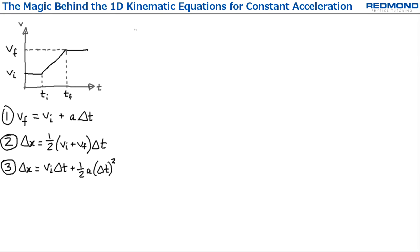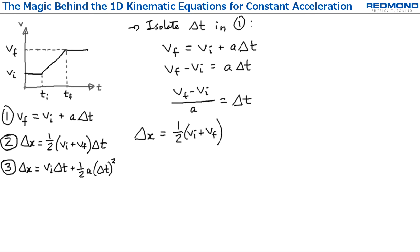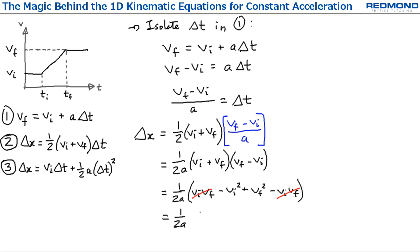For the fourth and last equation, I first isolate delta T in equation one, getting delta T is equal to Vf minus Vi over A, and then substitute that into equation two: delta x is equal to one half Vi plus Vf times Vf minus Vi over A. These terms are all multiplied, so I move the A beside the two, and then expand, simplify, and eventually isolate Vf squared is equal to Vi squared plus two A delta x.